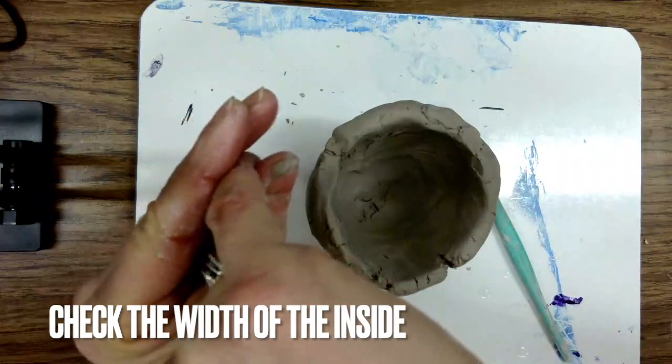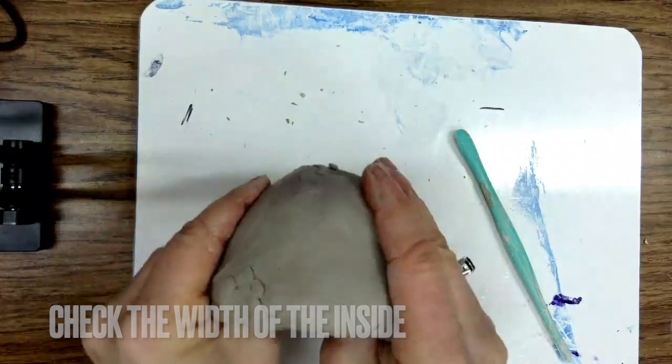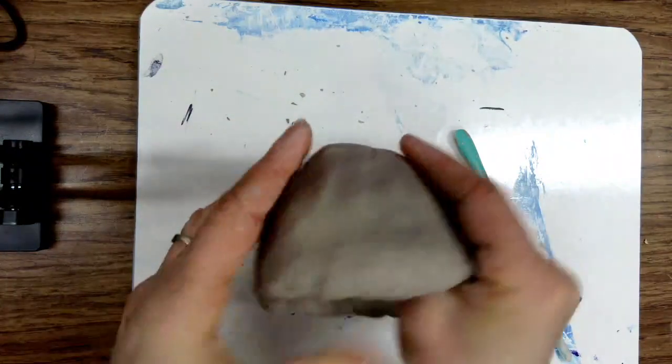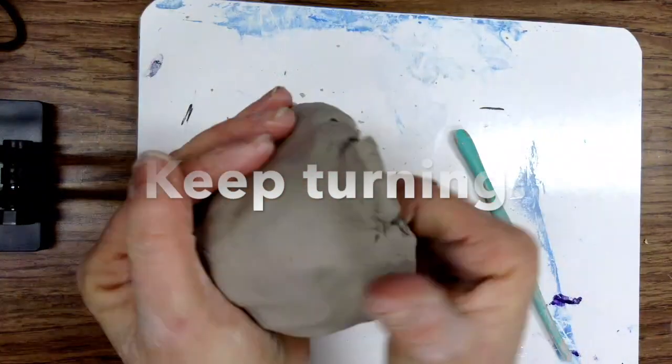To smooth out the inside and make it thinner on the inside. The inside should also be no larger than your pinky. Keep turning.